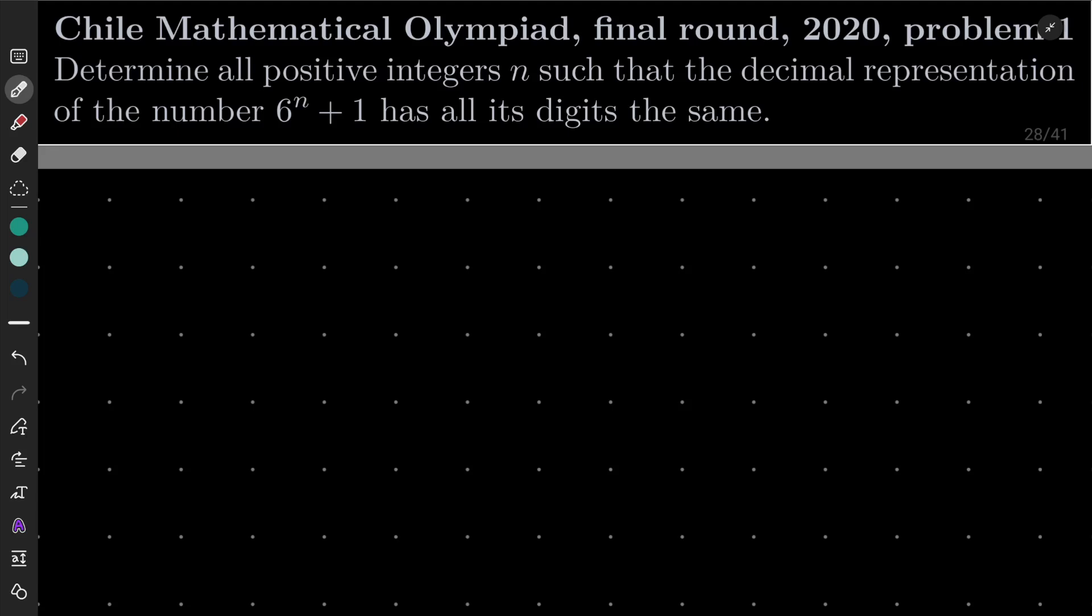We wish to find all positive integers n such that the decimal representation of the number 6 to the power of n plus 1 has all its digits the same.